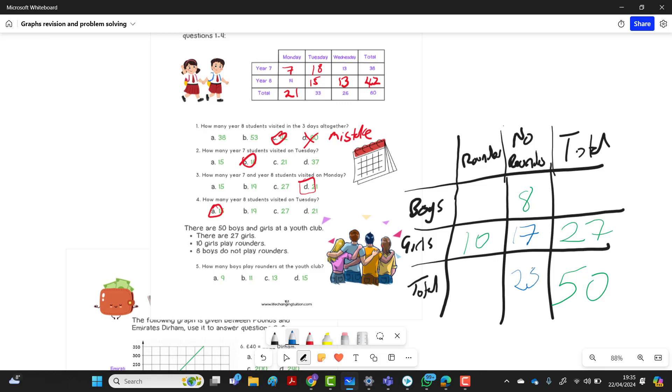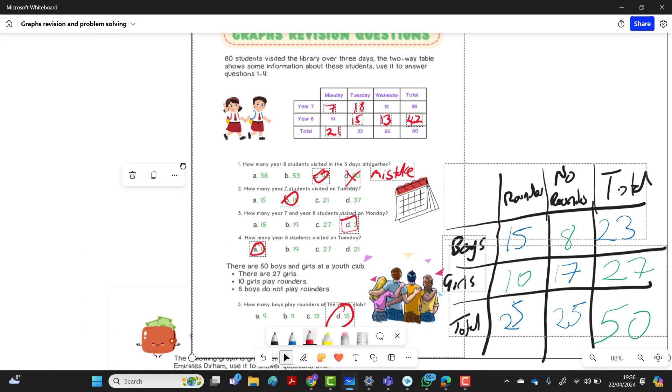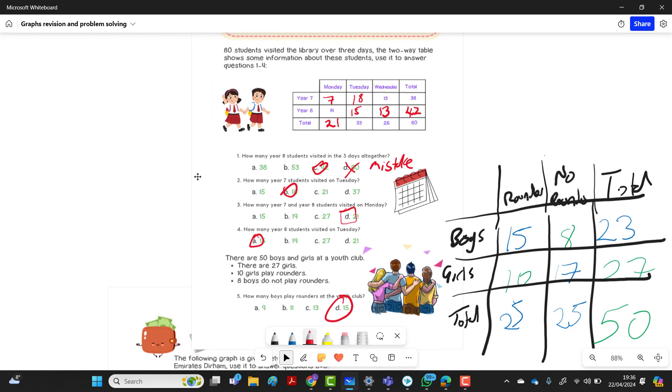Okay, as before, we're going to do the missing ones. So we've got two in the line, and we've got the missing ones. So we've got girls, no rounders. So that'd be 27 take away 10, so that'd be 17. And 8 plus 17 will give us total how many play no rounders, which is 25. Let's do the total boys. 27 girls, so do 50 take away 27, 23. And then we can use that to calculate how many boys play rounders. So that'd be 23 take away 8, 15.